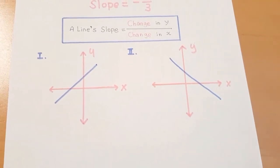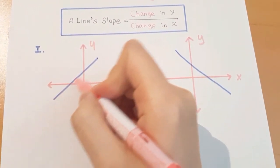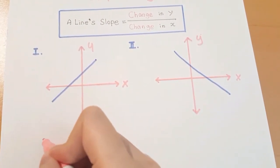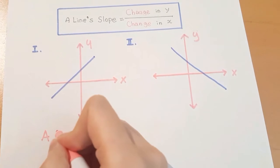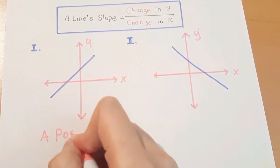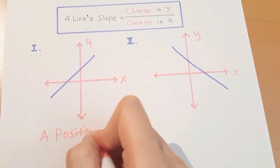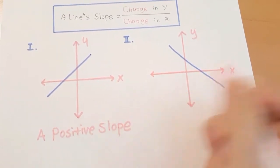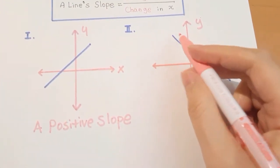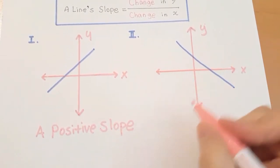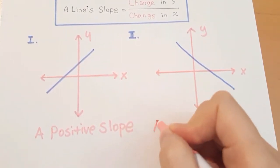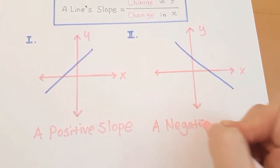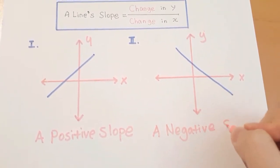When the line is rising, we say that this line has a positive slope. When the line is falling, we say the line has a negative slope.